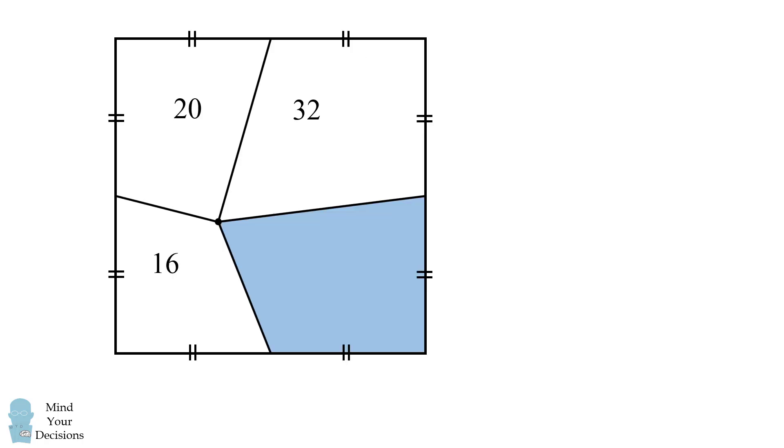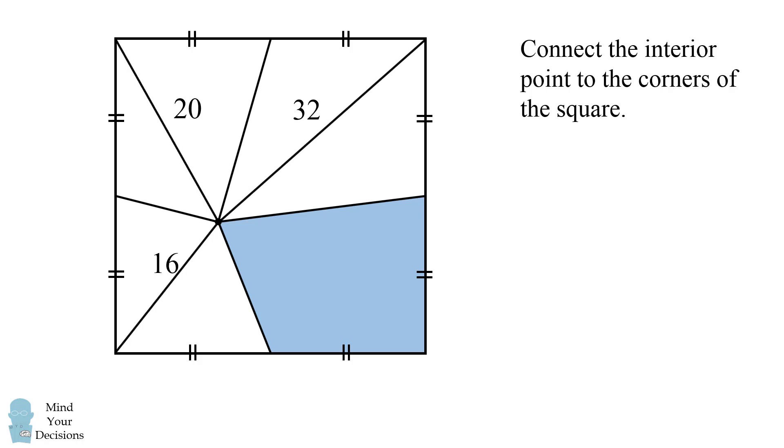We'll go back to our diagram. Now connect the interior point to the four corners of the square. This is going to divide the square into eight different regions. I'll color code these regions to make it a little easier to keep track of the areas.